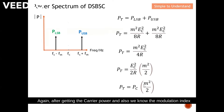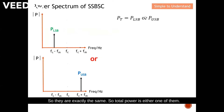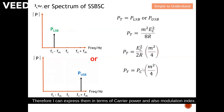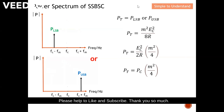Last but not least, for single sideband suppressed carrier, the total power is either just the lower sideband or just the upper sideband — they are exactly the same. The total power is m²Ec² / 8R. Factoring out the carrier power Ec² / 2R, we get: Pt = Pc × m²/4. You can calculate the total power of single sideband suppressed carrier as long as you know the carrier power and the modulation index. With that, I'd like to end this discussion — please like and subscribe. Thank you so much.